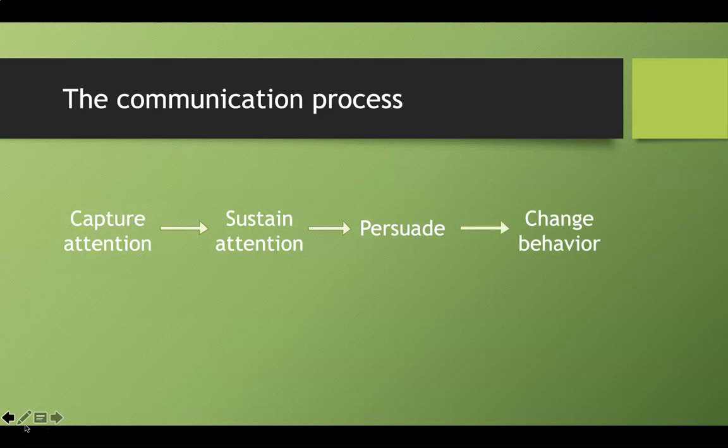And lastly, ultimately, what we want to do is change people's behavior on the ground. We want them to follow the rules, we want them to practice Leave No Trace, we want them to avoid conflict, we want them to do a variety of different things that align with the management goals of that space, right? So this communication process, we want to capture attention, sustain their attention, persuade visitors, and ultimately change their behavior. That's the goal, changing behavior.